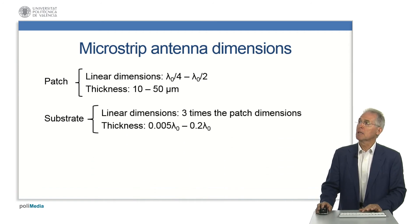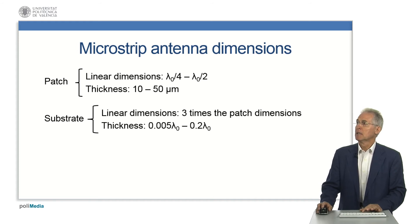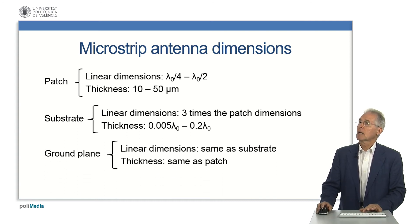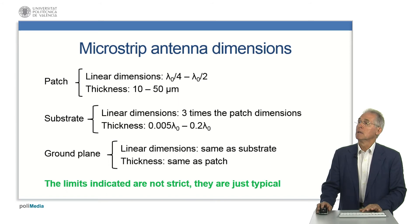The substrate has linear dimensions at least three times the patch dimension, and thickness in the range 0.005 lambda-0 to 0.2 lambda-0. The ground plane has the same dimensions as the substrate and the same thickness as the patch. It is necessary to point out that the indicated limits are not strict — they are just typical.